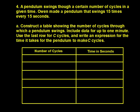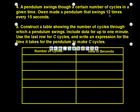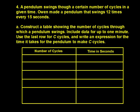Number four: a pendulum swings through a certain number of cycles in a given time. Owen made a pendulum that swings 12 times every 15 seconds — a pendulum is similar to what you see on a clock. On the table, we start by filling in 12 cycles and 15 seconds. Pause the video and come back when you're ready to compare your table to the correct answer.